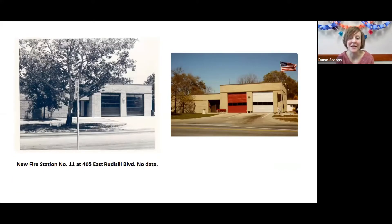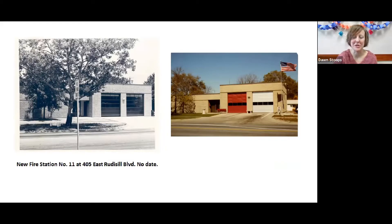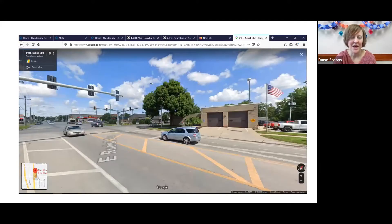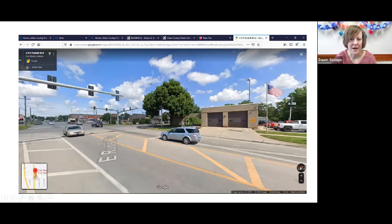And there's fire station number 11. These pictures don't have a date on them, but the fire station was built in the 70s and it's still the same building right now, just a little bit different — the doors look a little bit different. This is another Google Maps street view of what that would look like right now. If you're familiar with this area, kind of back over here is Southside High School. We're in Fort Wayne near Southside High School, and there's the fire station.